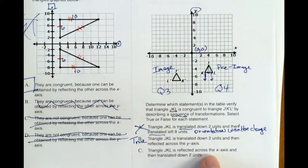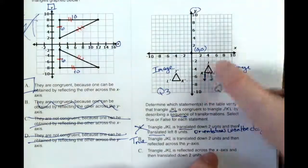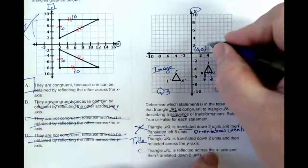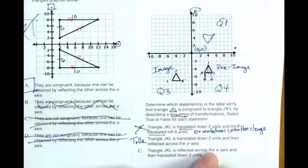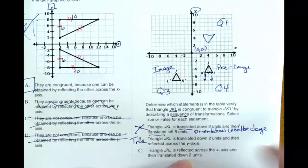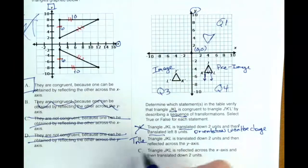Triangle jkl is reflected across the x-axis. Now, if I take this and I reflect it across the x-axis, it's going to end up up here in Q1. That's not going to help me, right? And then translating it just two units down, that won't work.